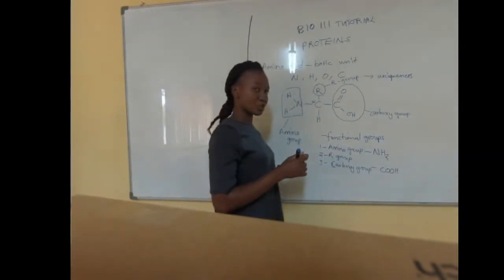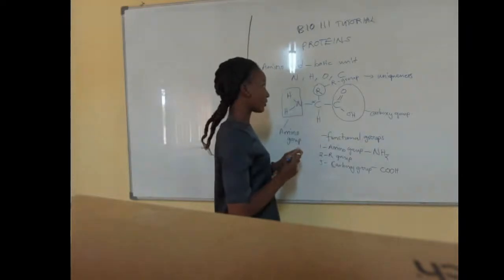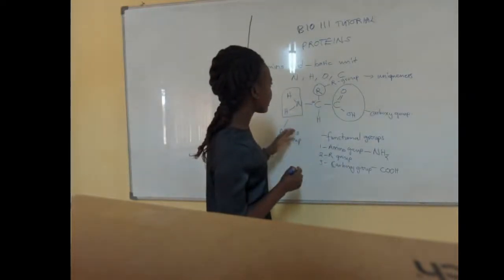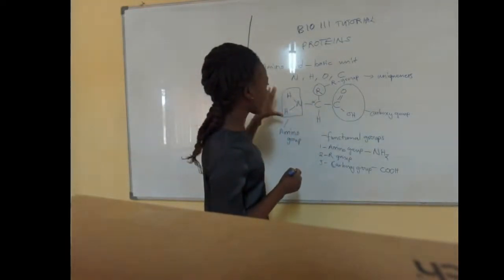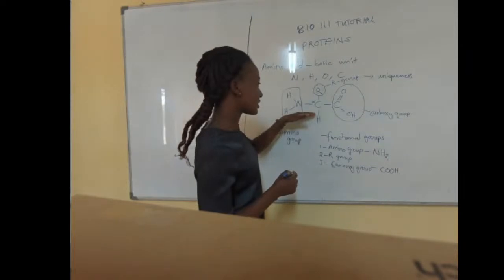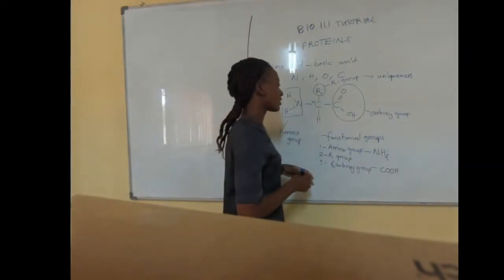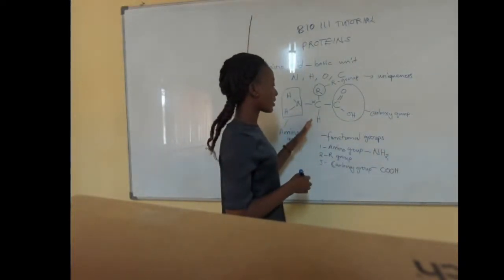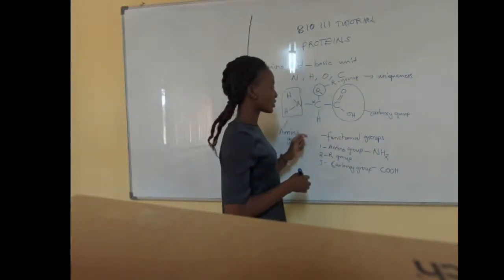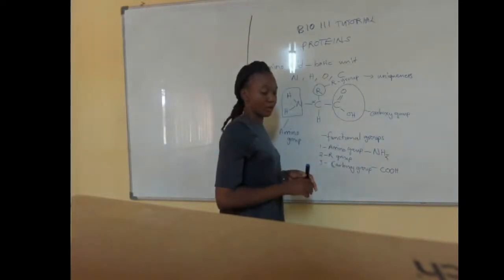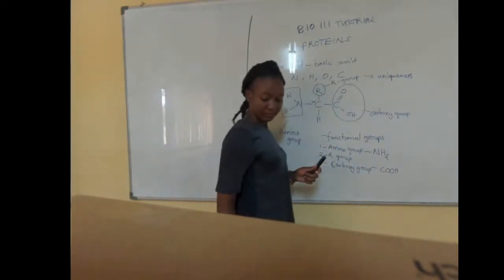So for the first question, we were asked to state the general formula for amino acids, which has been illustrated, and to state the functional groups — the amino group, the R group, and the carboxyl group. We can now move on to the next question.